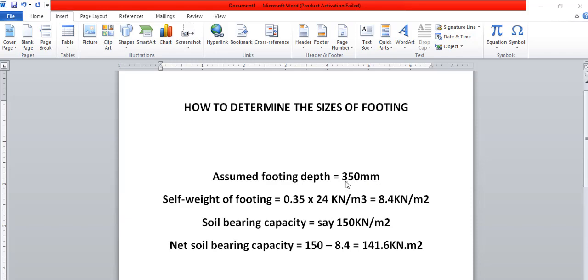If you choose to use 400mm or whatever you want to use, same process. Then the self-weight of the footing will be the depth of the footing times specific weight of concrete. When you multiply it, you will get 8.4 kN/m2.